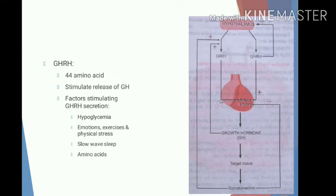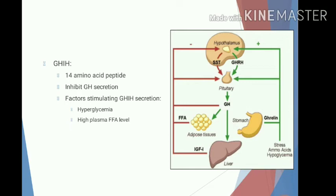Growth hormone releasing peptide, also known as ghrelin, increases GHRH secretion. Ghrelin is secreted by oxidative glands of the stomach and it increases growth hormone release by direct action on the anterior pituitary gland. Growth hormone release inhibiting hormone (GHRIH) is also a polypeptide having 14 amino acids, and it inhibits the release of growth hormone from the anterior pituitary gland.